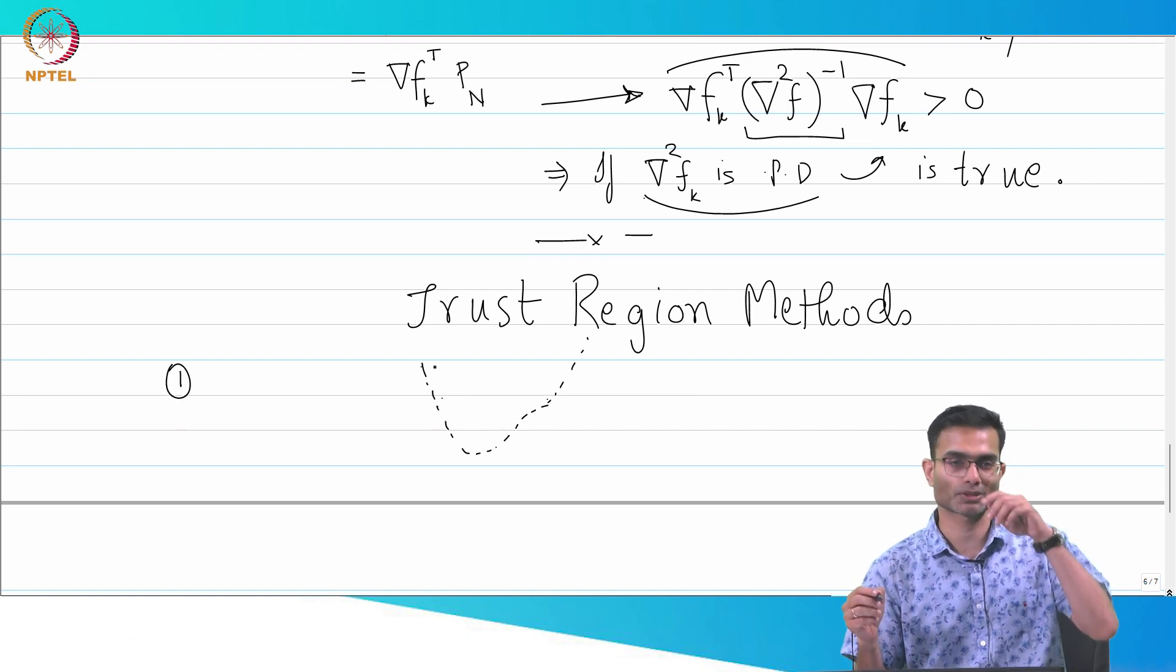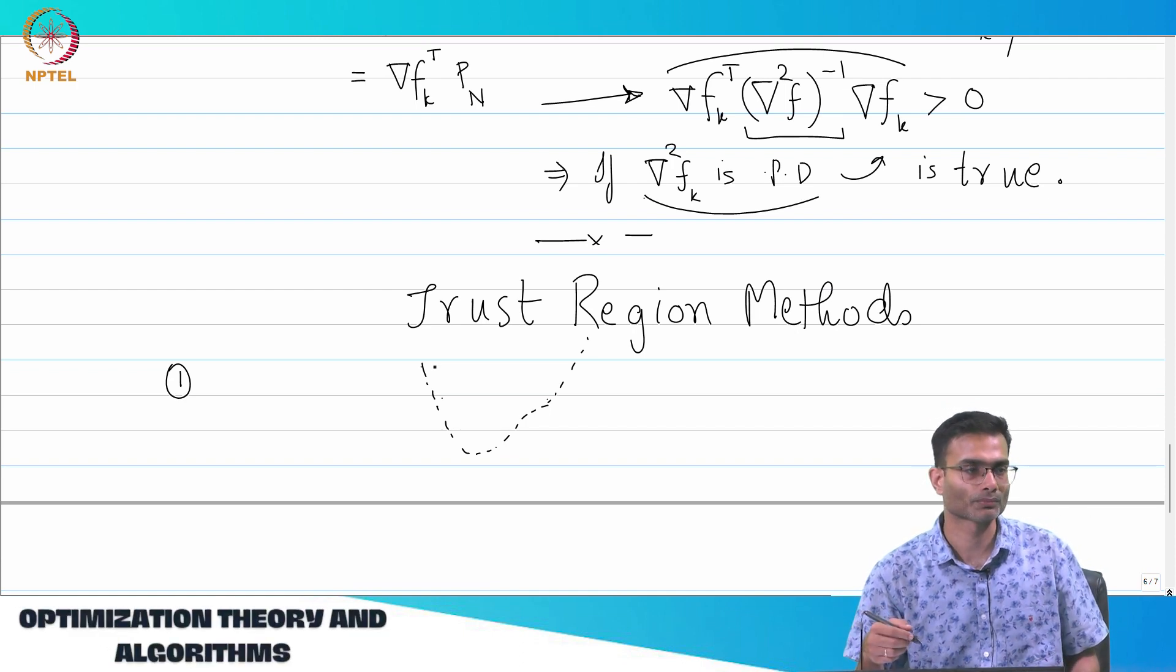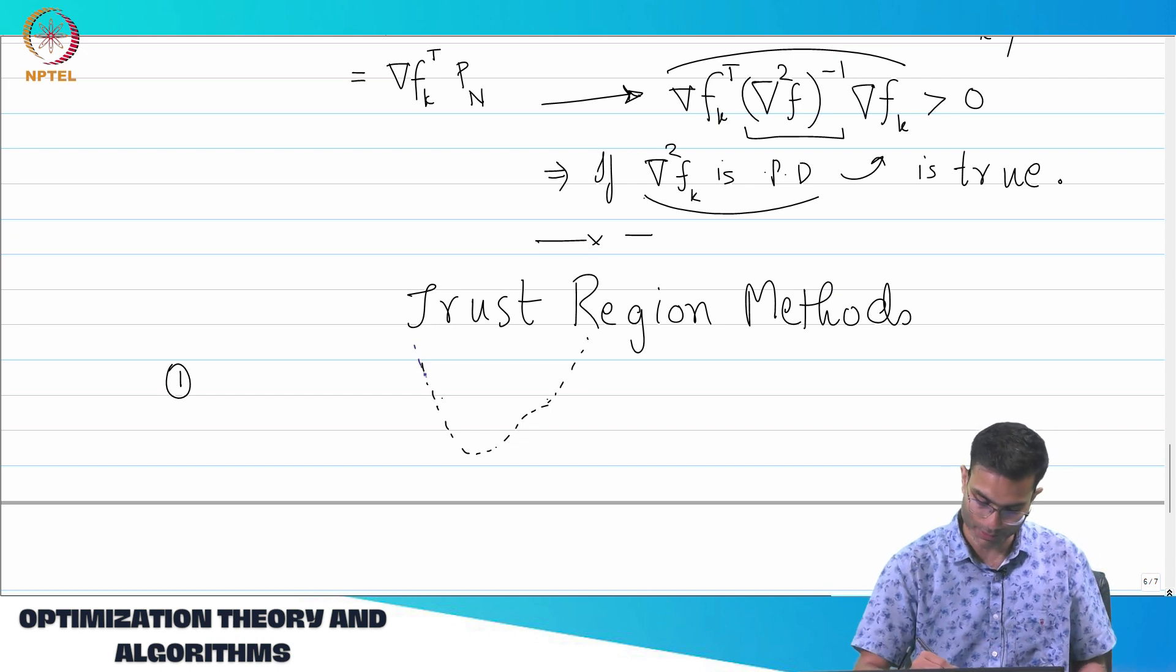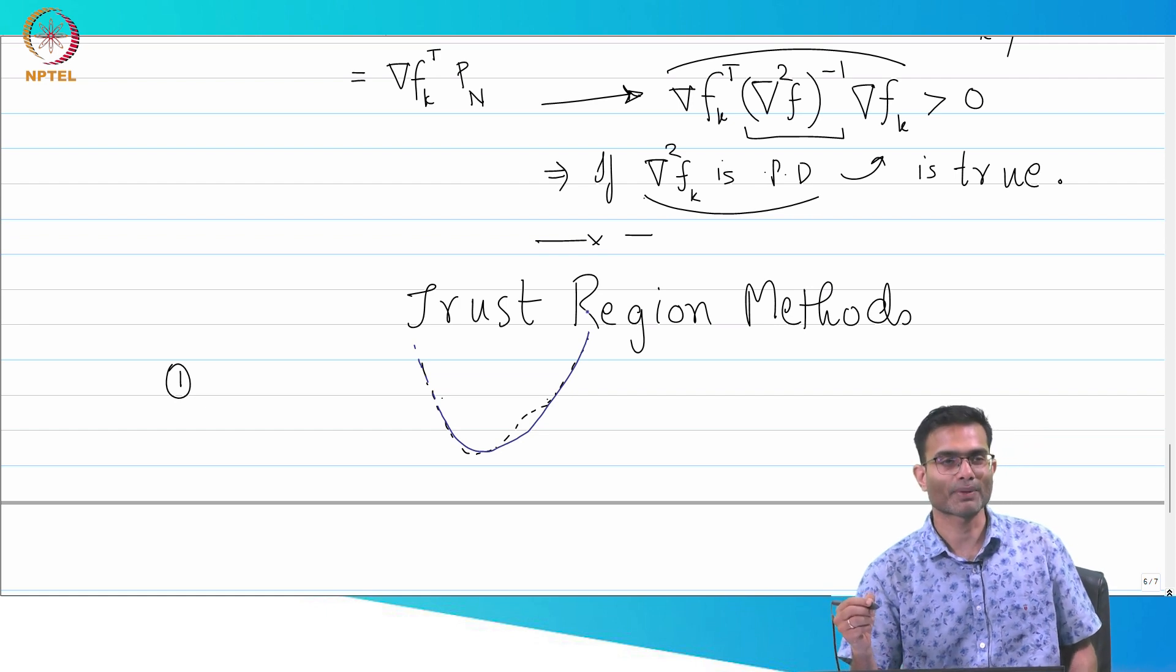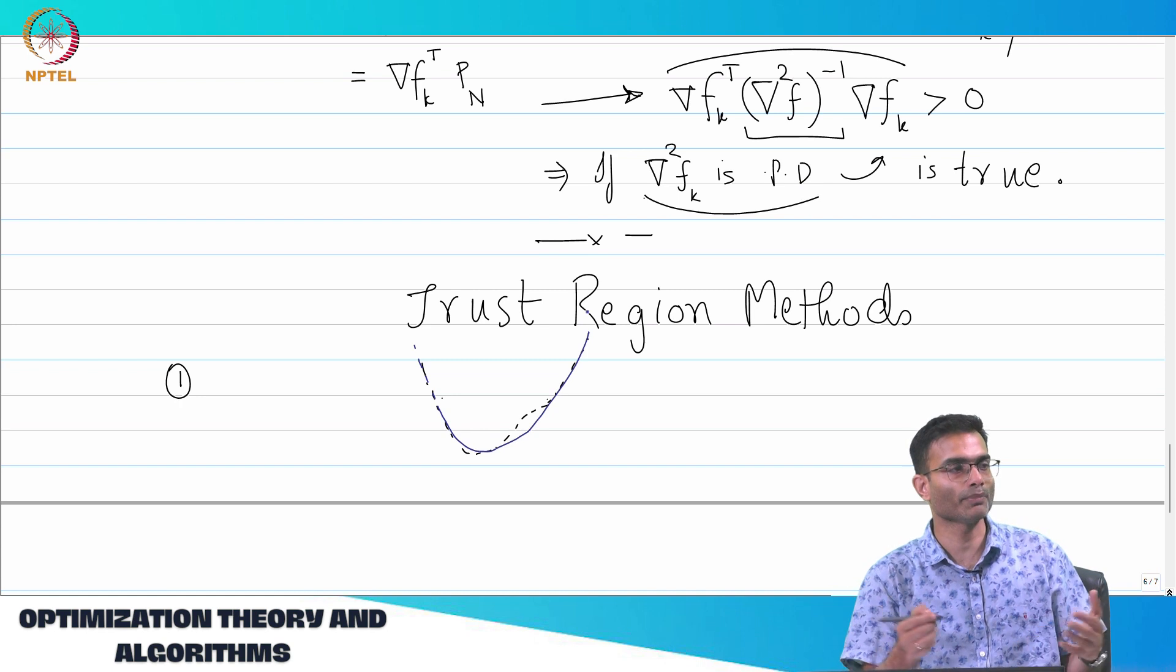If you wanted to do the simplest possible model that explains this data, what would you do? Fit a quadratic expression. I will get something like this. There will be some error somewhere, but this reasonably explains the data.